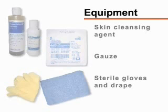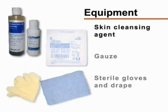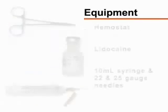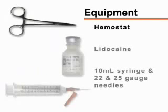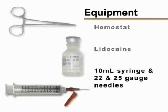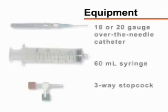For sterile preparation of the site and administration of anesthesia, you will need a skin cleansing agent, sterile gauze, sterile gloves, a sterile drape, a hemostat (which is optional), 1 or 2% lidocaine, and a 10-milliliter syringe with a 22 to 25-gauge needle.